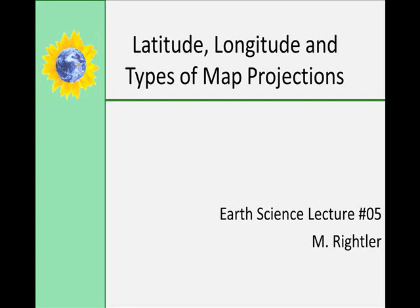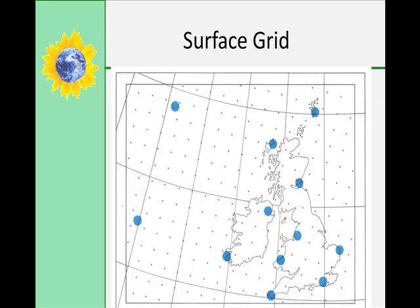Welcome back. This is lecture five, part one on latitude, longitude, and the types of map projections. We're going to start off with what a surface grid is. Scientists have established a surface grid, which is a system of circular lines that you can use to locate any position on the earth. This type of system, called a coordinate system, assigns to every position on earth a pair of coordinates — two numbers called latitude and longitude.